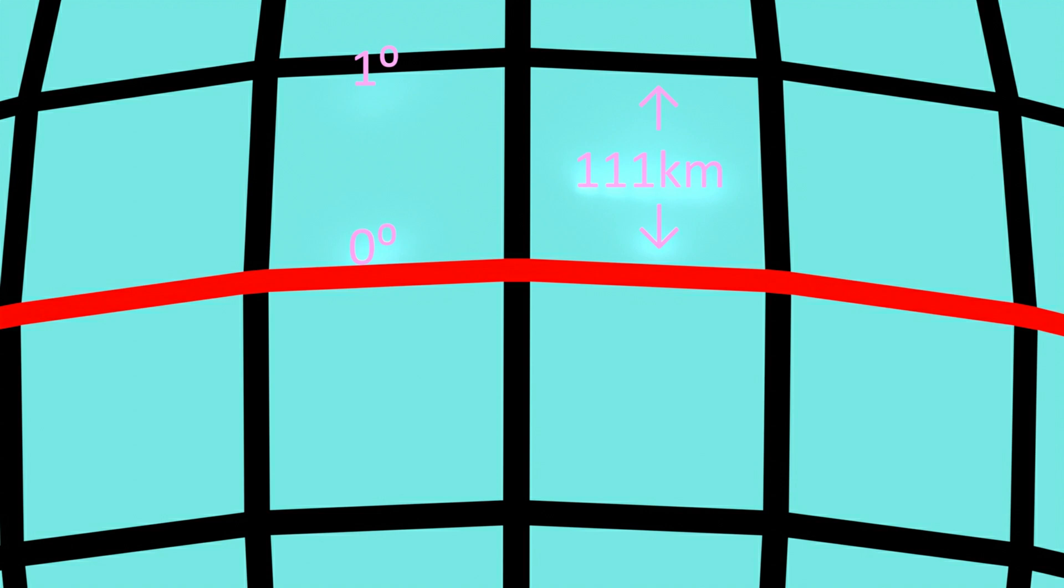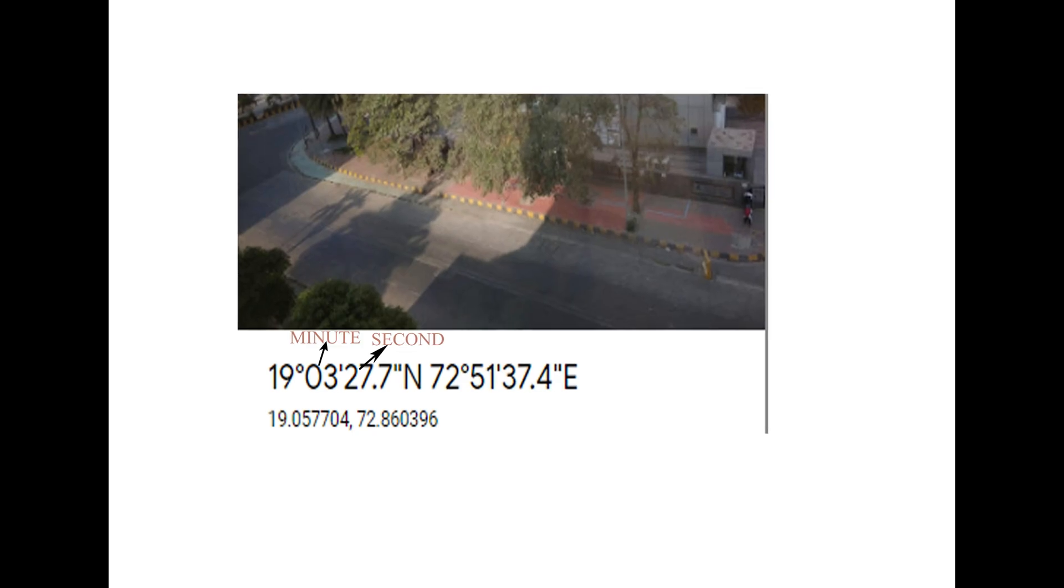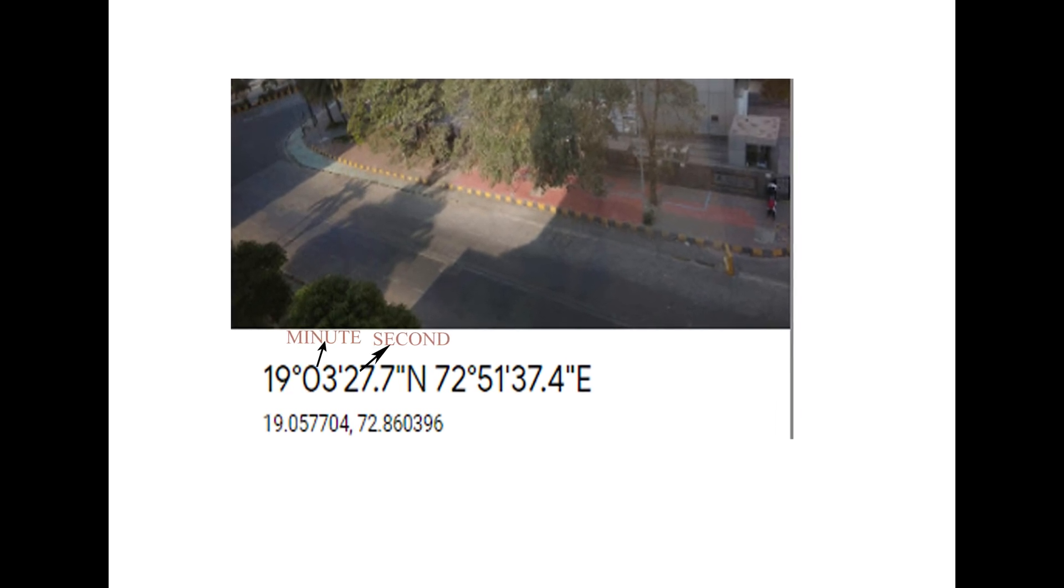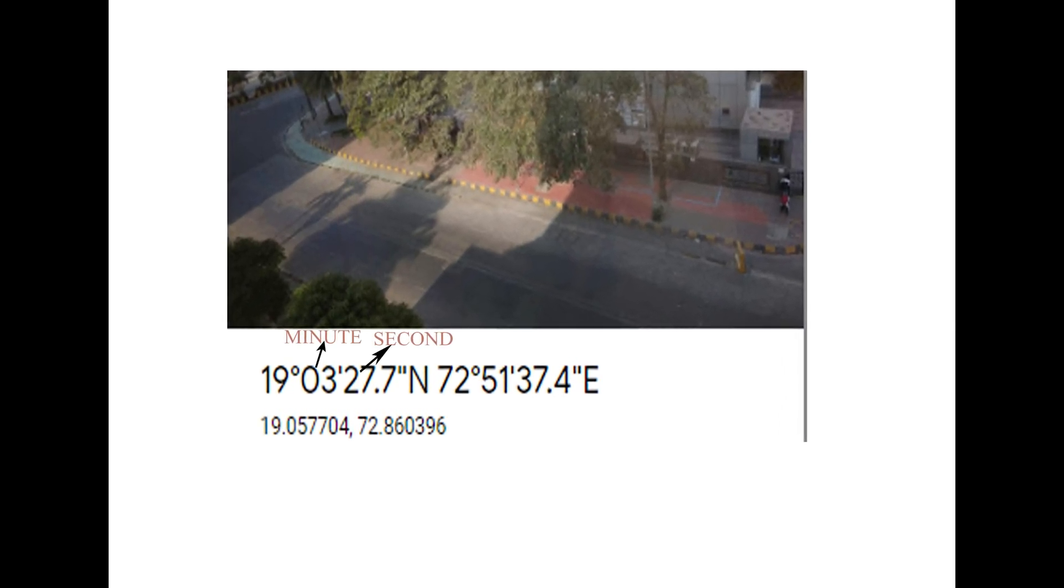An important thing to remember is that the distance between two adjacent parallels is 111 km on the surface of the earth. The distance between two adjacent meridians is also 111 km on the equator. To locate a place within the distance of 111 km exactly, we need to divide the angle degree into smaller units. Degrees are divided into minutes and minutes into seconds.